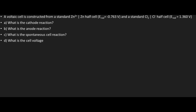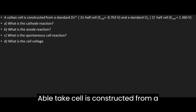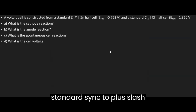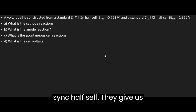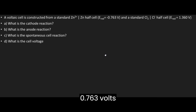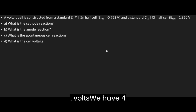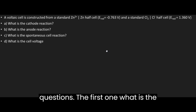A voltaic cell is constructed from a standard zinc Zn²⁺/Zn half cell with a redox potential of -0.763 volts, and a standard chlorine/chloride half cell with a redox potential of 1.360 volts. We have four questions to answer.